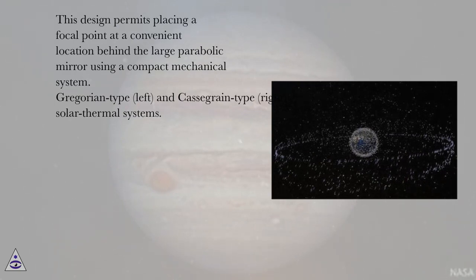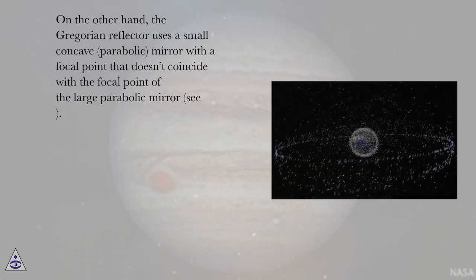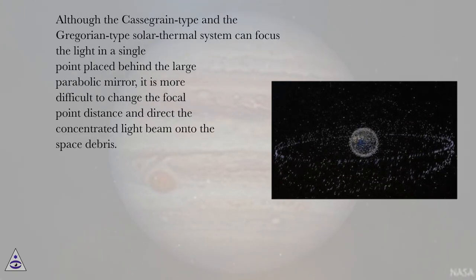Gregorian-type and Cassegrain-type solar thermal systems. On the other hand, the Gregorian reflector uses a small concave parabolic mirror with a focal point that doesn't coincide with the focal point of the large parabolic mirror. Although the Cassegrain-type and the Gregorian-type solar thermal system can focus the light in a single point placed behind the large parabolic mirror, it is more difficult to change the focal point distance and direct the concentrated light beam onto the space debris.